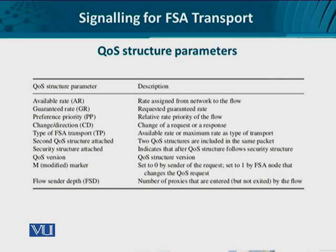Sometimes QS provisioning has to be incorporated regardless. The end host, knowing that QS could be denied by the network, can include a secondary QS structure — if the network does not agree with the first one, it can switch to the second. There is also a security structure: if security functionality such as confidentiality, integrity, and authenticity is to be provided, a security structure must be included. The QS structure version accounts for differences between IP version 4 and IP version 6. Finally, there is a marker, which is a single bit — set to zero by the sender, but if a flow state aware node changes the QS request, it enables or sets the flag.